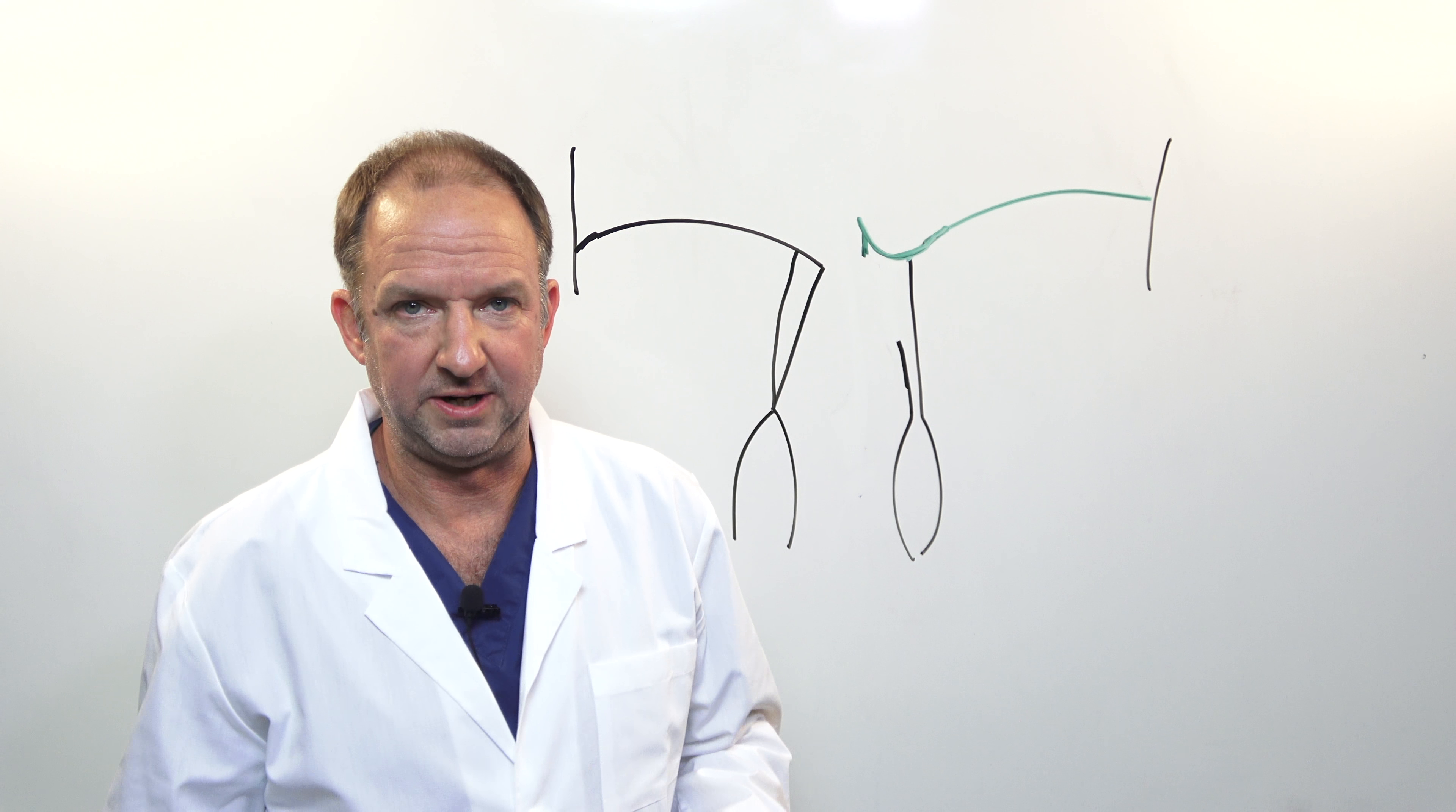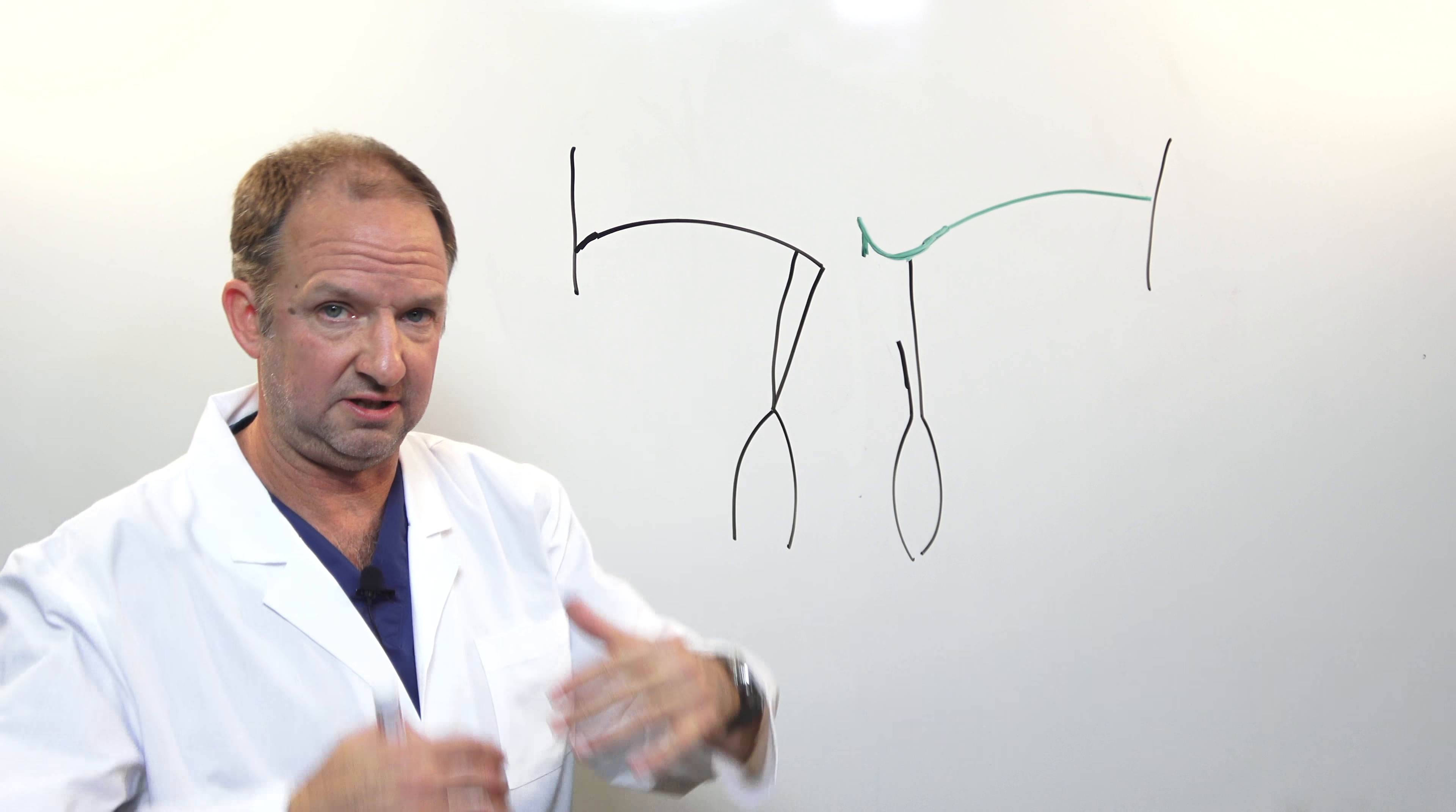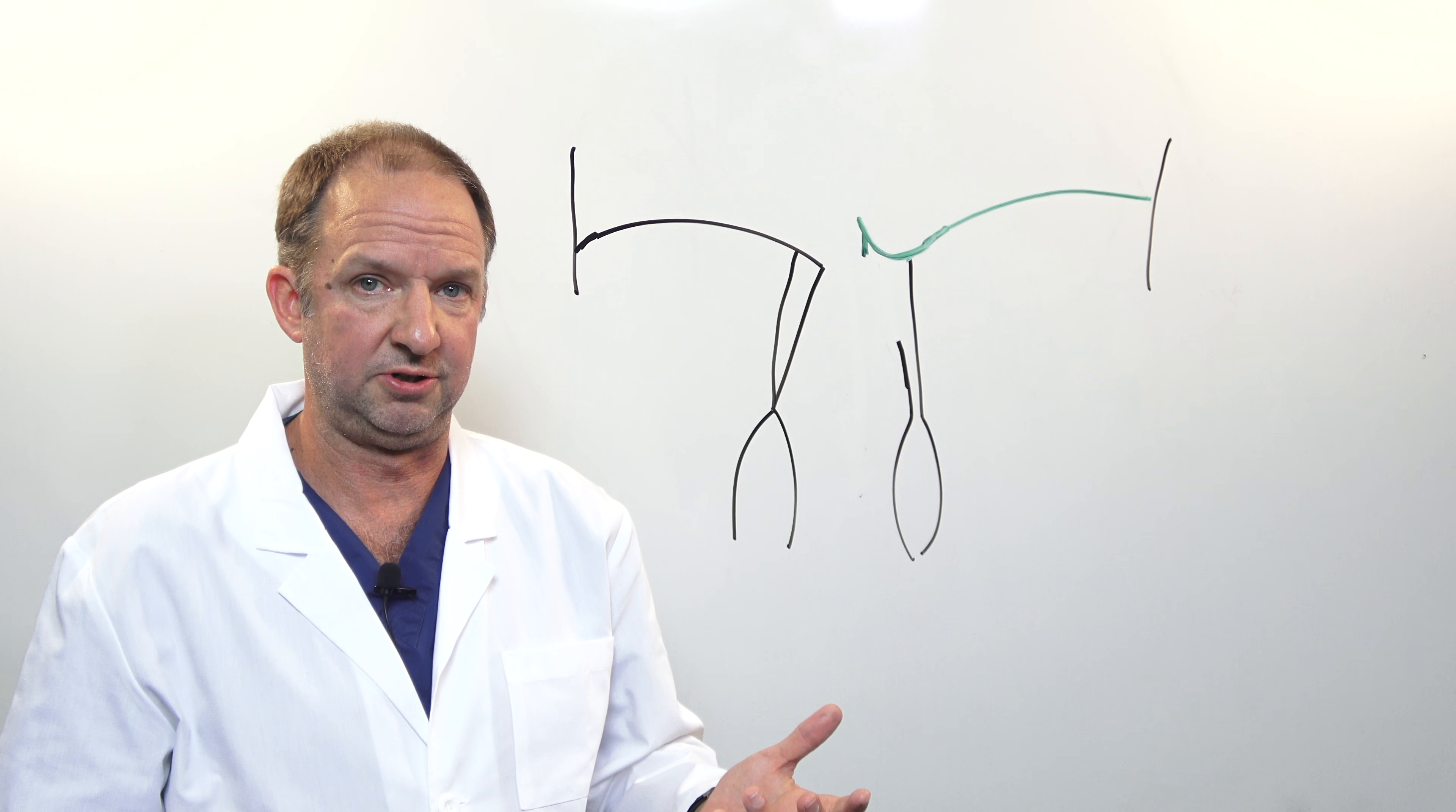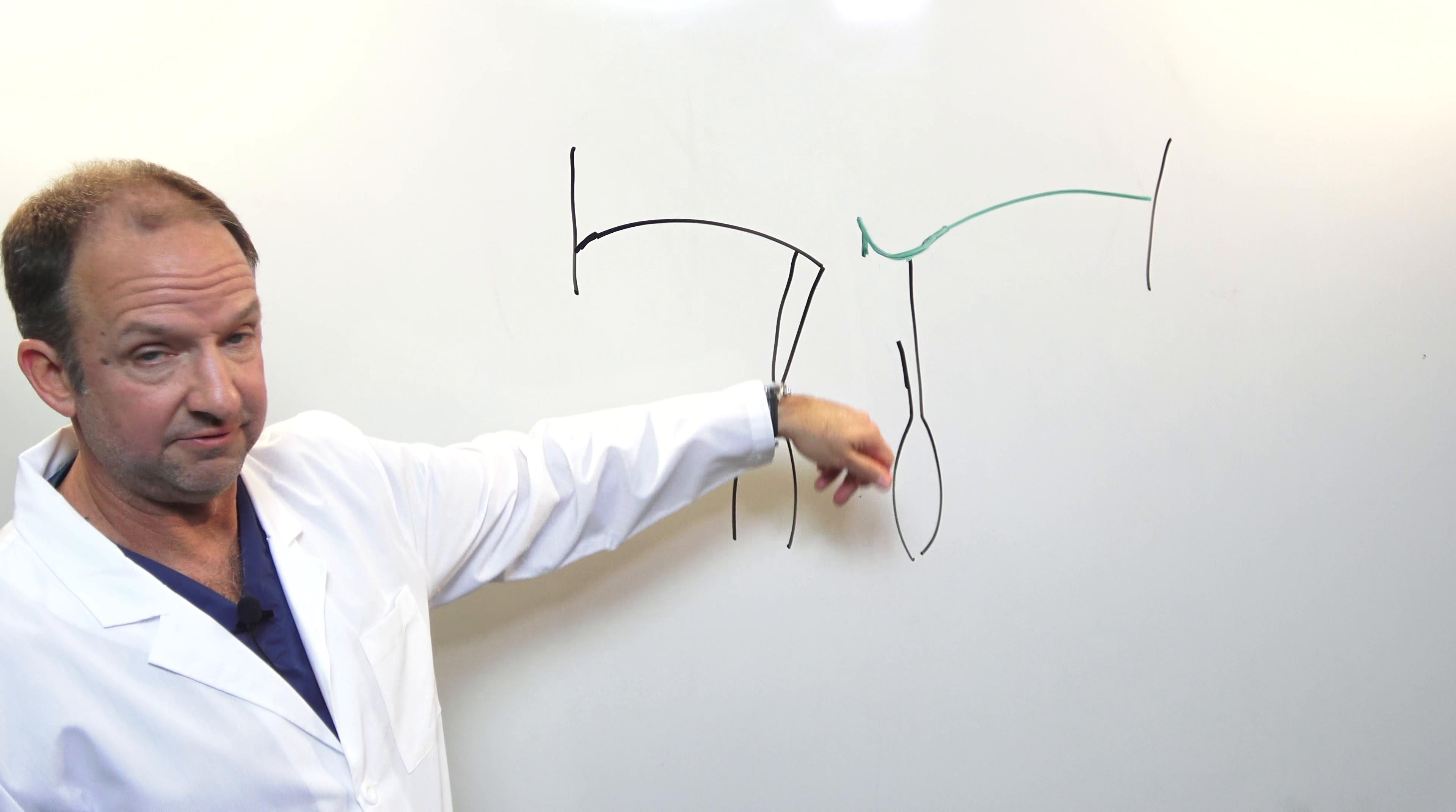In that disease process what happens is that the chordae or the strings that attach to the undersurface of one of the leaflets has ruptured or elongated. In that situation, like I've drawn here,